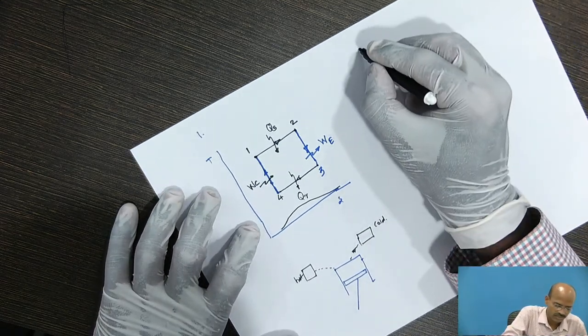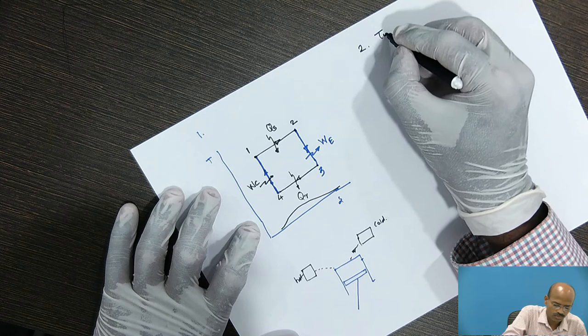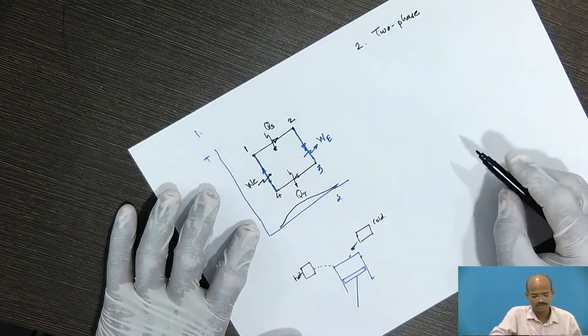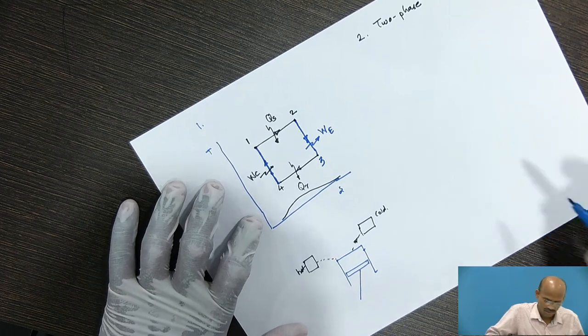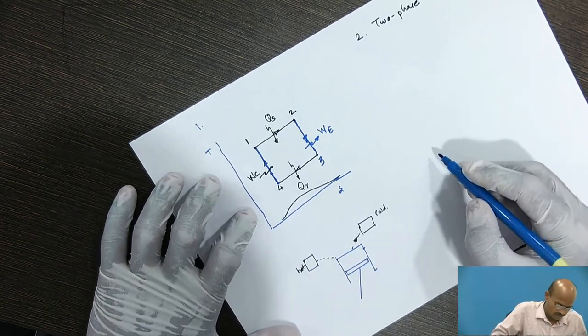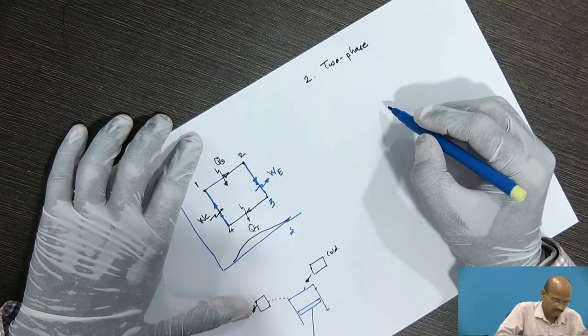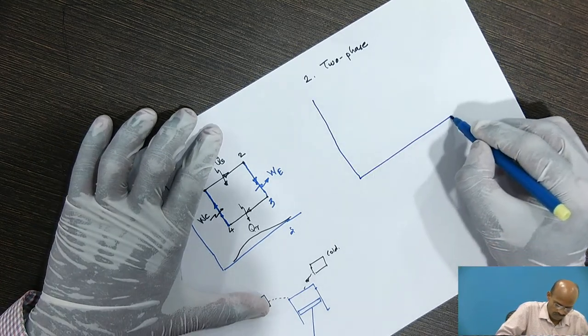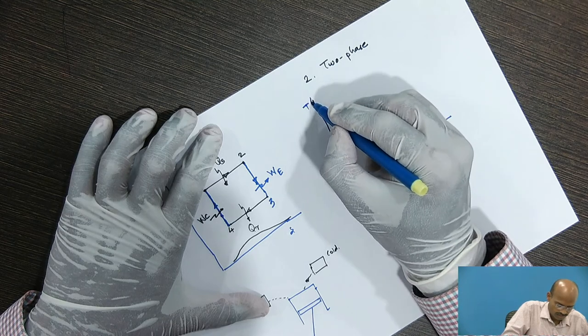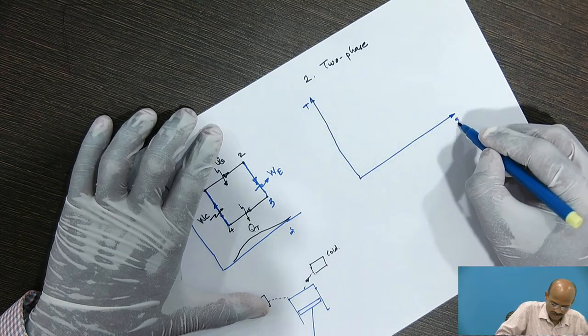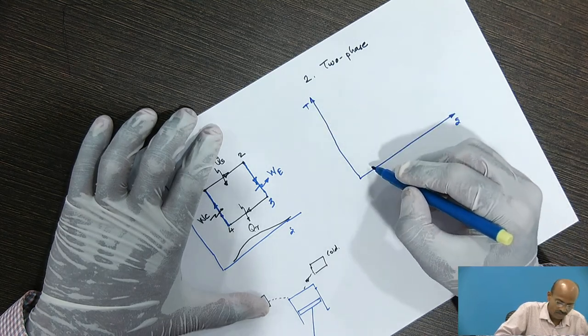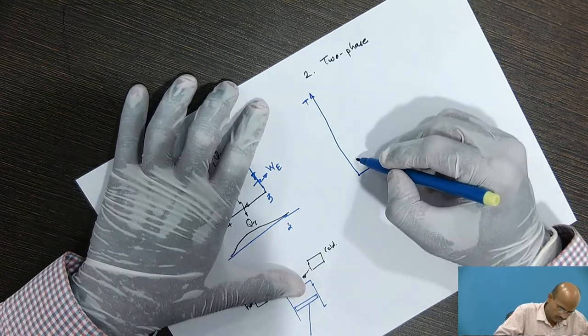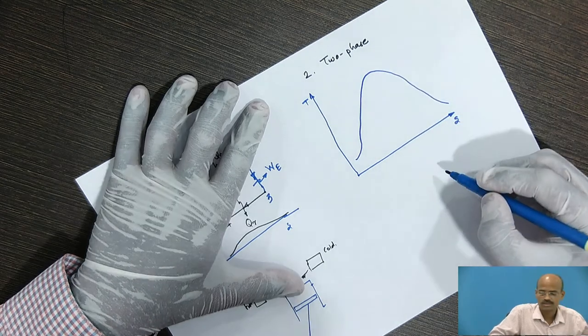Now, second type of Carnot cycle is two phase Carnot cycle. Once again, I will show it on the T-S plot. Temperature versus specific entropy and first of all, I will draw the saturated curve. This is the saturated curve.